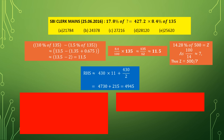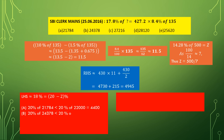18% can be written as 20% minus 2%. Instead of calculating directly, we will sort the answer from the options. Option A: 20% of 21,784 is less than 20% of 22,000, which is less than 4400. After subtracting 2% more it won't reach 4945, so option A is eliminated. Option B: 20% of 24,378 is less than 4900, and subtracting 2% makes it lower still — also not the answer.